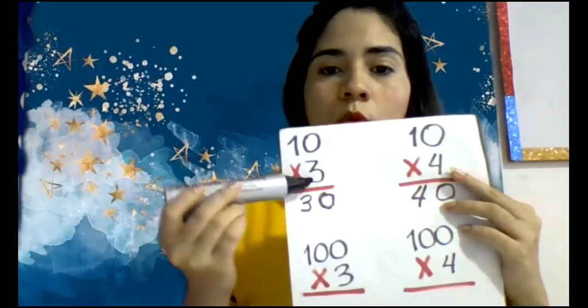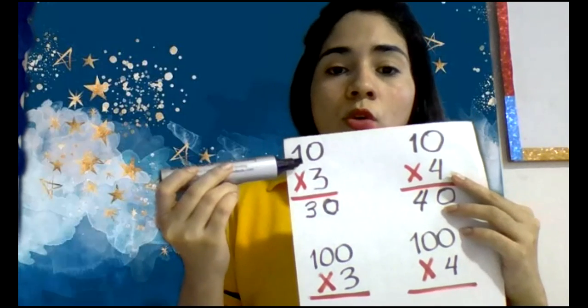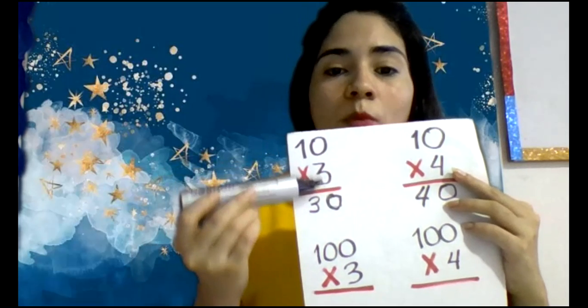Cero por 10, cero. Cero por 11, cero. Cero por 2, cero. Pero cuando tú multiplicas un número por 1, te va a dar el mismo número.